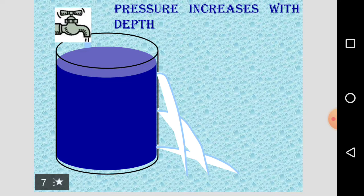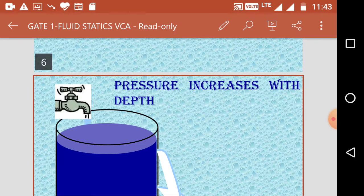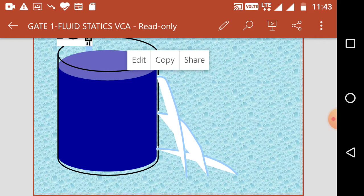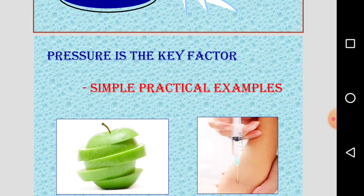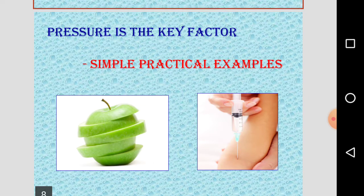You know pressure is more as the depth increases. See here in the sketch, it is clear that the bottommost hole water flowing out of the bottom hole flows with greater pressure, followed by the top one, and pressure is still less in the topmost one because depth of water available above it is less.